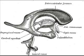Each lateral ventricle has three horns. The anterior or frontal horn extends into the frontal lobe. The posterior or occipital horn extends into the occipital lobe. The inferior or temporal horn extends into the temporal lobe. The body of the lateral ventricle is the central portion.